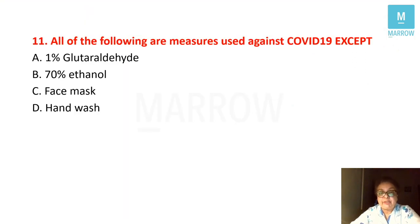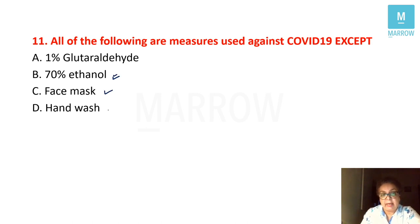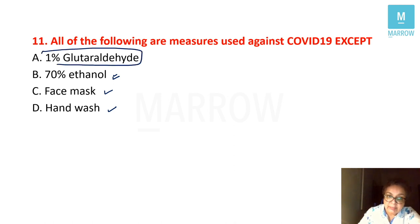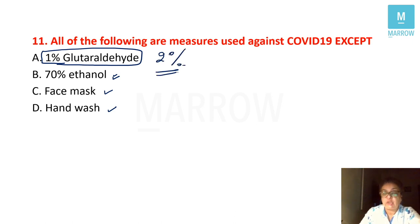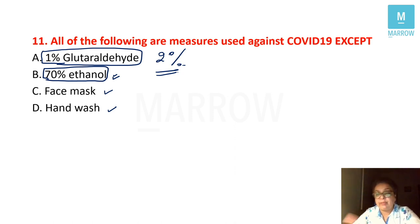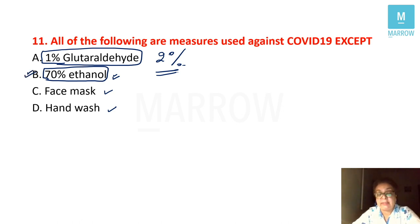All measures used against COVID-19 except: 70% ethanol — yes; face mask — yes; hand wash — yes; but glutaraldehyde (Cidex) is effective at 2% concentration, not 1%. Remember: 70% is the best concentration of alcohol — most effective compared to 60% or 80%.